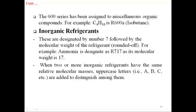The 600 series has been assigned to miscellaneous organic compounds, for example butane and isobutane. The formula of butane is C₄H₁₀ and the formula of isobutane is also C₄H₁₀, but both are isomers, so isobutane is known as R600a. Inorganic refrigerants are designated by the number 7 followed by the molecular weight of the refrigerant rounded off. For example, ammonia is designated as R717, as its molecular weight is 17.